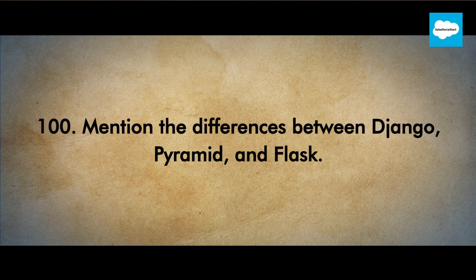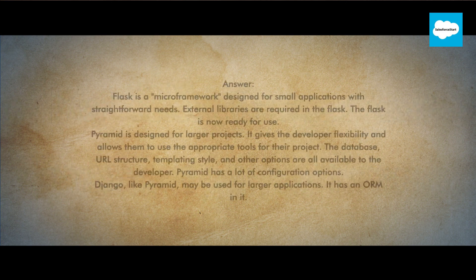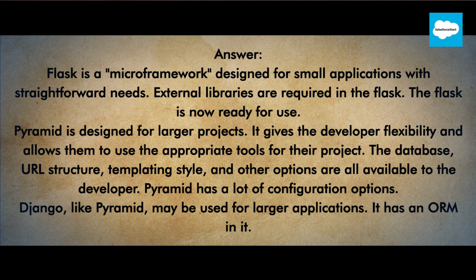Mention the differences between Django, Pyramid, and Flask. Flask is a microframework designed for small applications with straightforward needs; external libraries are required in Flask. Pyramid is designed for larger projects — it gives the developer flexibility and allows them to use the appropriate tools for their project. The database, URL structure, templating style, and other options are all available to the developer. Pyramid has a lot of configuration options. Django, like Pyramid, may be used for larger applications and it has an ORM built into it.